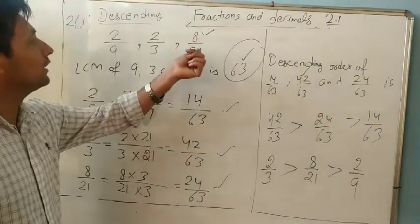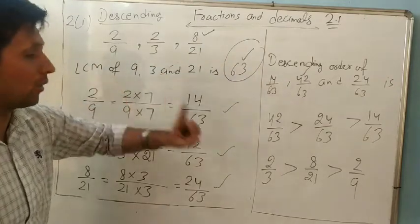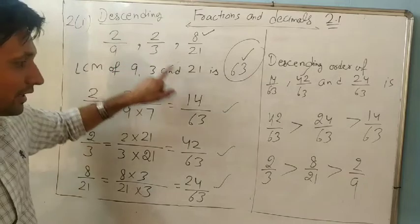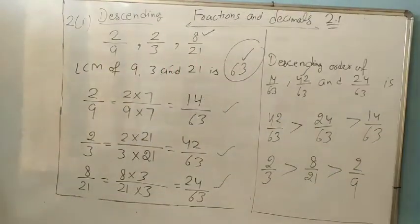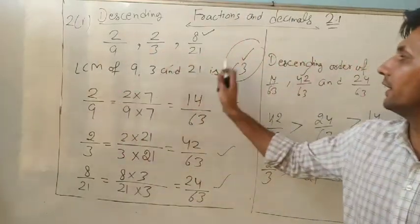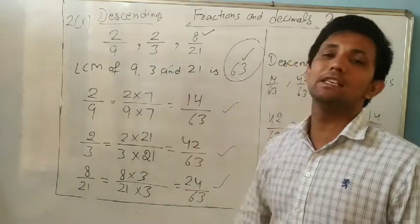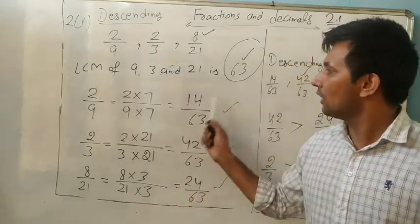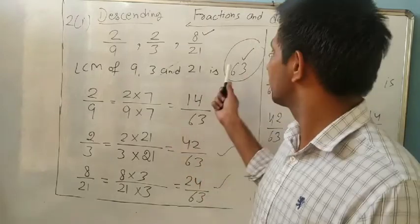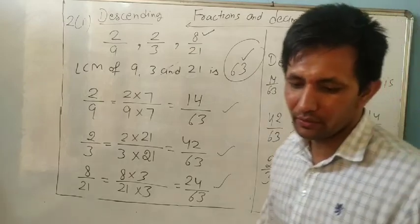Don't judge the size of a fraction just by looking at the numerator alone — for example, 2/1 looks bigger than 2/3, but you must follow the proper method. Always find the LCM when denominators are different, make all denominators equal, then compare. That is your answer.